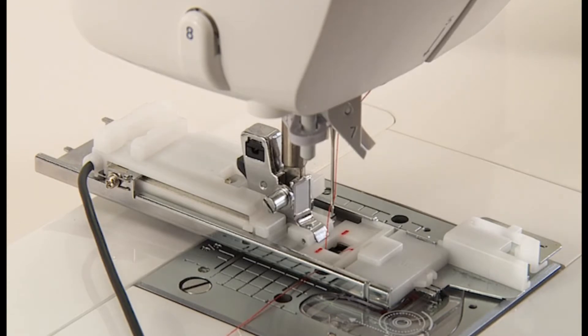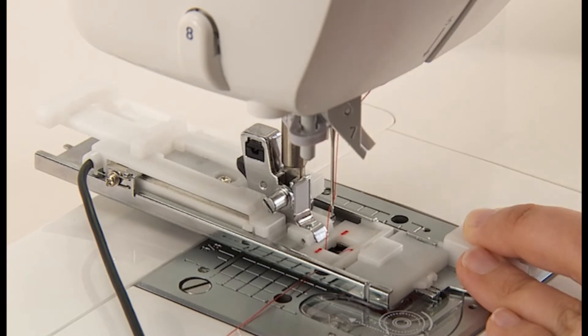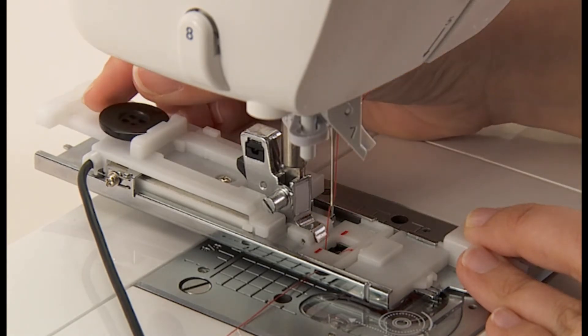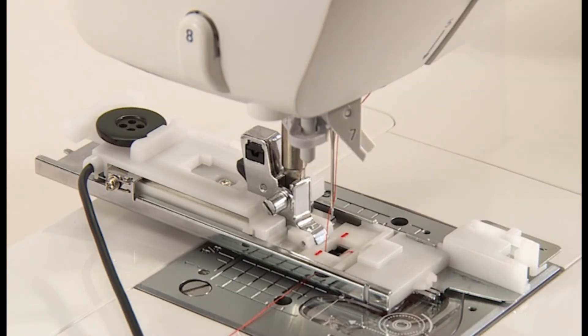Set the button, pull the button holder, place the button on the button holder, and then push the holder to set the buttonhole length. This step sets a suitable buttonhole size.